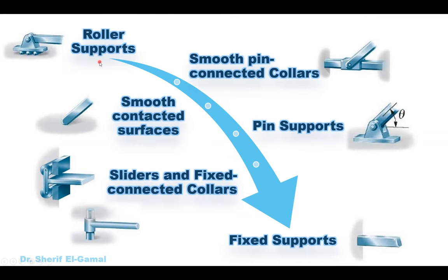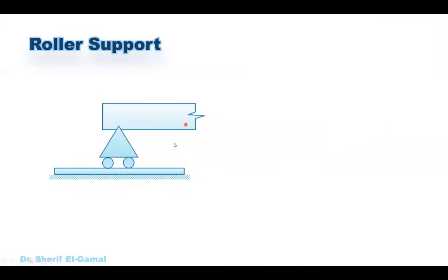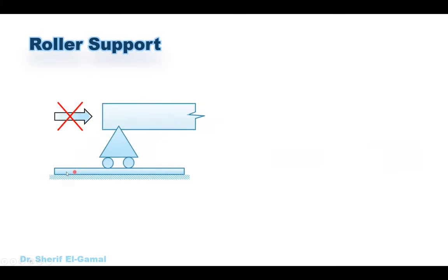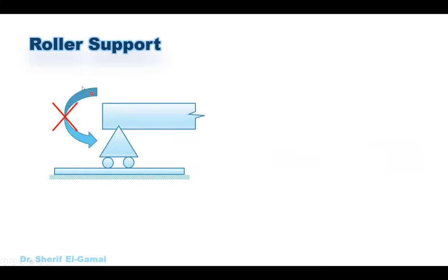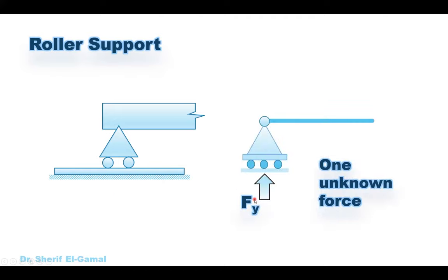Let's start with the roller supports. For the roller supports, it allows for movement parallel to the supporting surface, so there will not be any horizontal reaction. It can move freely, so no reaction parallel to the supporting surface. Also it can rotate about the z-axis, so there is no moment. For the roller support: no moment, no horizontal reaction, and therefore the only unknown is a vertical reaction called FY.